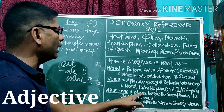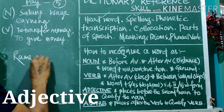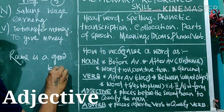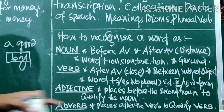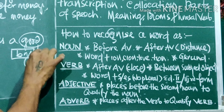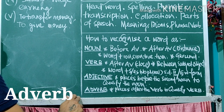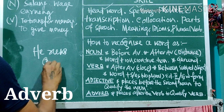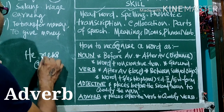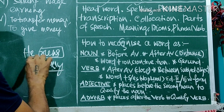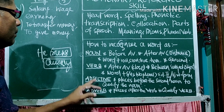For adjective: an adjective is a word placed before a noun to qualify it. For example, 'Rambo is a good boy' — 'good' is placed before the noun 'boy' to qualify it, so 'good' is an adjective. For adverb: an adverb is placed after the verb to qualify it. For example, 'He runs quickly' — 'quickly' comes after the verb 'runs' to qualify it, so 'quickly' is an adverb.